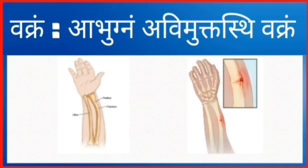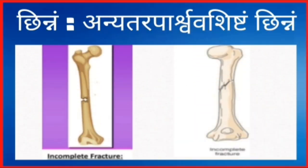Avimukta: the bone is bent inwards without separation. That is, it is not separating.